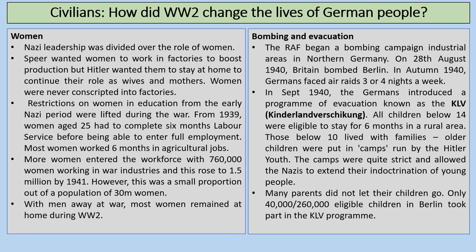In terms of bombing and evacuation, the RAF — the Royal Air Force — began a bombing campaign against industrial areas in northern Germany. On the 28th of August 1940, Britain bombed Berlin, and in autumn 1940, Germans faced air raids three or four nights a week. So in September 1940, the Germans introduced a programme of evacuation known as the KLV — Kinderlandverschickung. All children below 14 were eligible to stay for six months in a rural area. Those below 10 lived with families, while older children were put in camps run by the Hitler Youth. The camps were quite strict and allowed the Nazis to extend their indoctrination of young people.